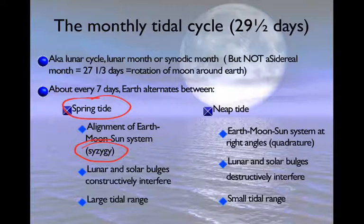The lunar and the solar bulges, remember, tides are waves. And when the waves interact with each other, we get constructive interference, which is why we get the highest highs and the lowest lows.